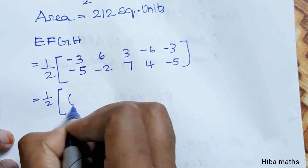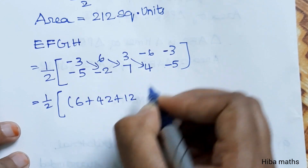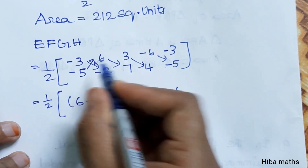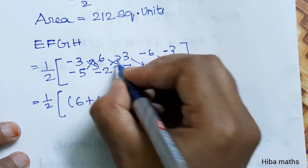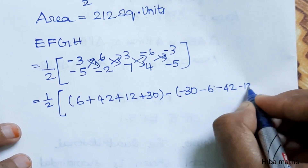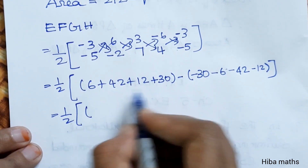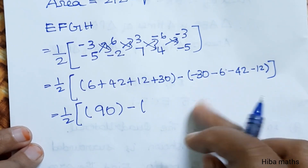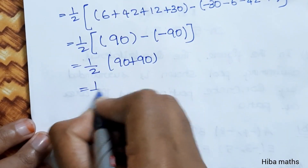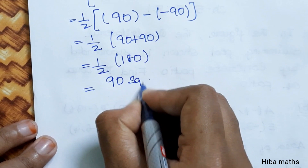This is 1/2 into: three twos are six; six sevens are forty-two; three fours are twelve; six five is thirty. Minus into minus plus thirty. Minus six, minus three two is six minus six; seven six is forty-two minus forty-two; four three is twelve minus twelve. 1/2 into: 42 + 54 + 60 + 90 minus 54 + 60 + 90, giving 90 plus 90 = 180, divided by 2 equals 90 square units. So area of EFGH is 90 square units.